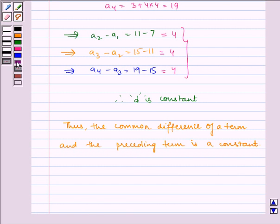Hence, a1, a2, a3, ... when an = 3 + 4n is an AP.